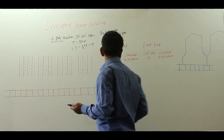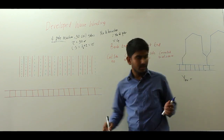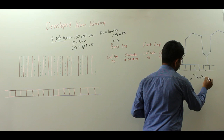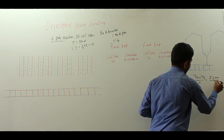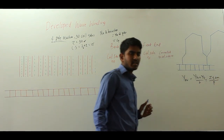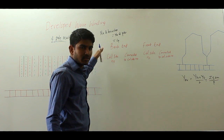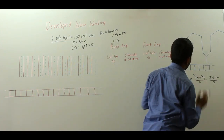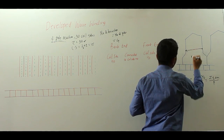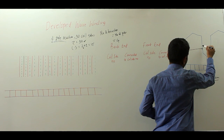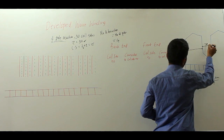Now the average pitch Y_average is given by the average of YB plus YF upon 2, and this equals (Z ± 2M) / P, where M equals 1 for simplex wave winding. In a wave winding, the back pitch YB is the coil span, and the front pitch YF is the distance in terms of armature conductors from the finished side of one coil to the starting side of the next coil.